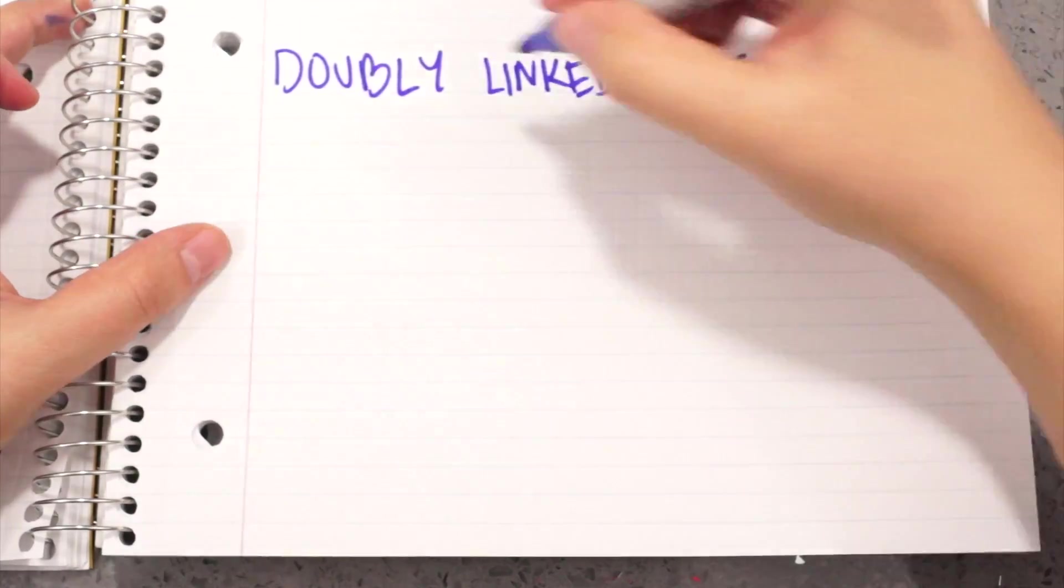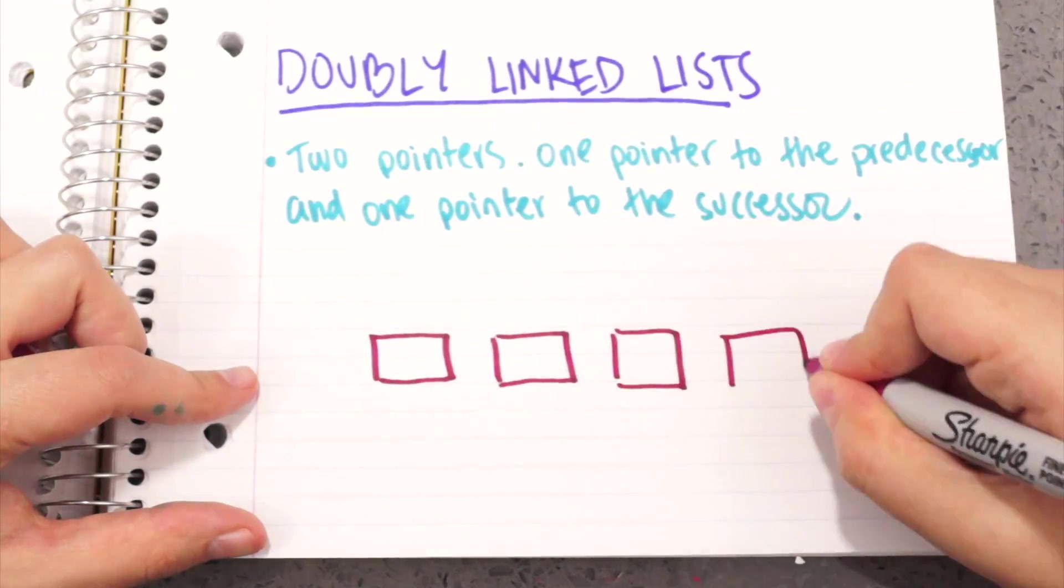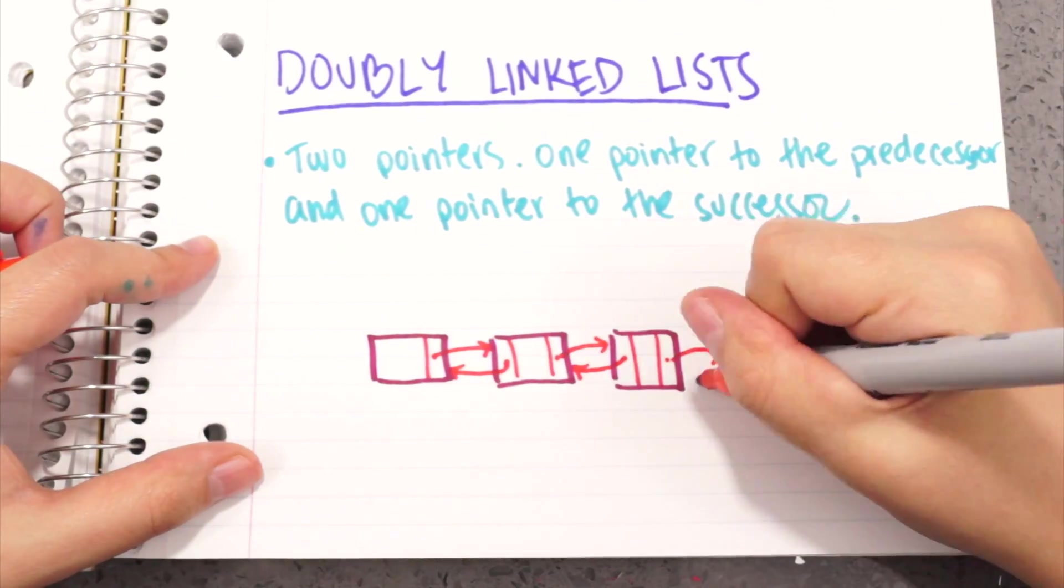Let's talk about doubly linked lists. Doubly linked lists have two pointers per node, one to the predecessor and one to the successor.